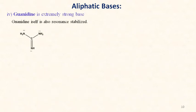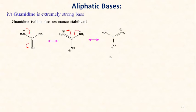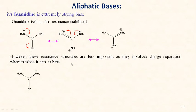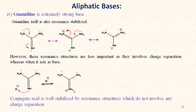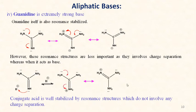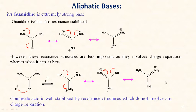Guanidine is an extremely strong base. Guanidine itself shows resonance stabilization, though resonance forms involving charge separation are less important. When guanidine donates its electron pair to a proton, the resulting conjugate acid is well stabilized by resonance effect. Therefore guanidine is an extremely strong base among organic bases.